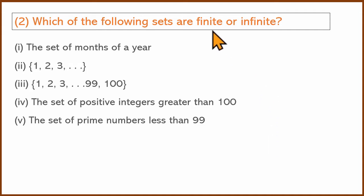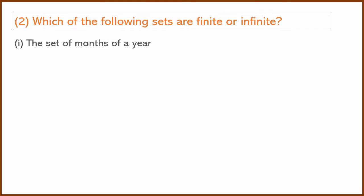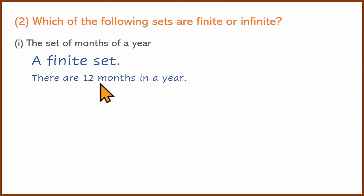Which of the following sets are finite or infinite? Finite means we can count the number of elements in a set. Infinite means you cannot count the number of elements in a set. Set of months of a year — there is one set of months in one year. There is a finite set.